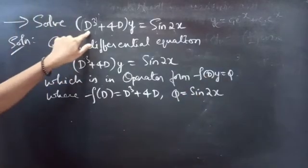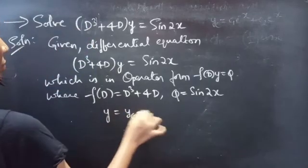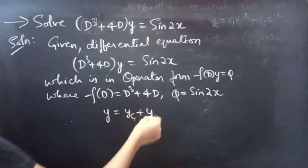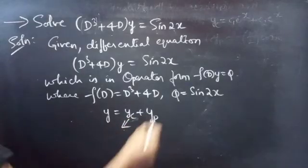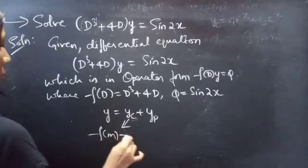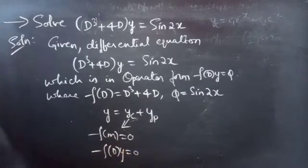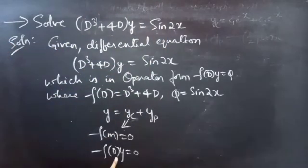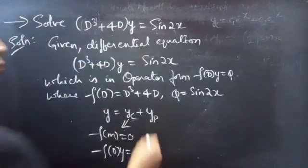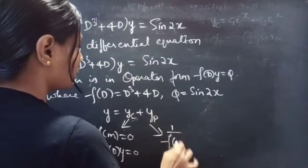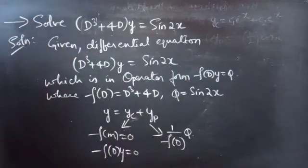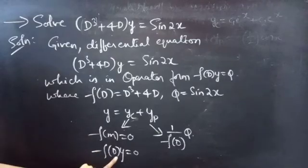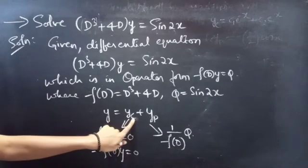We need to find the general solution, given by y = yc + yp. Here yc is the complementary function and yp is the particular integral. We find the complementary function using the roots of the auxiliary equation, obtained by taking the RHS to 0: F(D)·y = 0, which is the homogeneous equation.